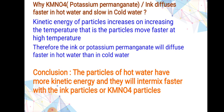Why does potassium permanganate or ink diffuse faster in hot water and slow in cold water? Because kinetic energy of particles increases with increasing temperature — particles move faster at high temperature. Therefore ink or potassium permanganate diffuses faster in hot water than in cold water. We conclude that particles of hot water have more kinetic energy and intermix faster with ink or potassium permanganate particles.